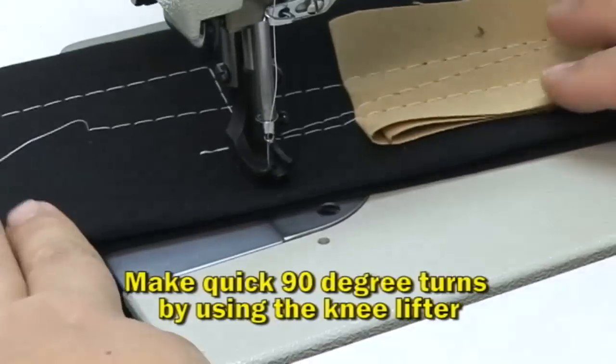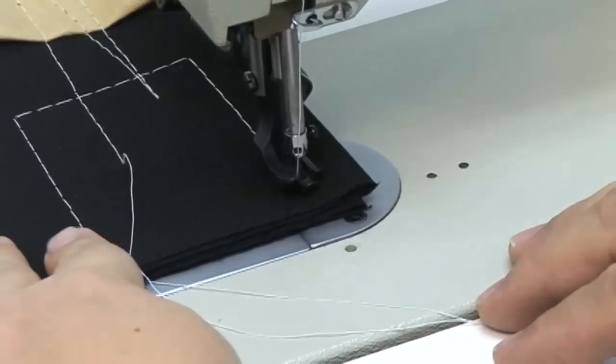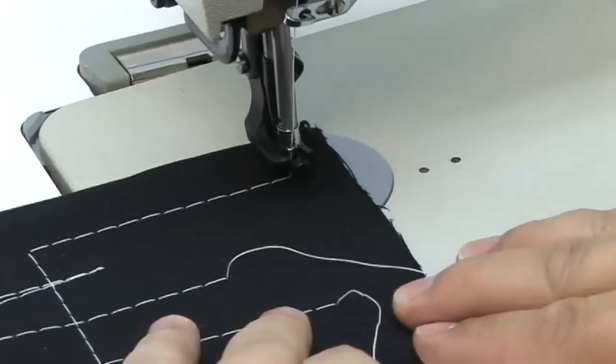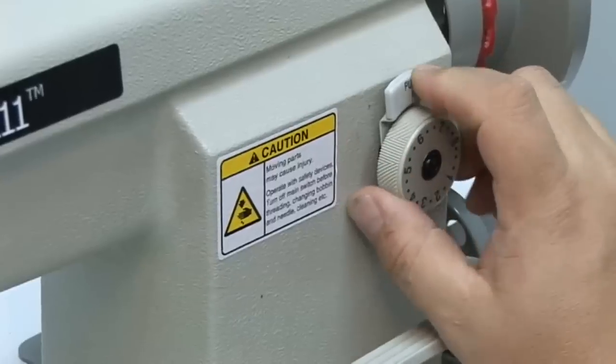Here we're using the knee lift for quick turns. The needle's buried and we lift the foot and pivot on the needle. This is great for high production where you don't have to reach behind the machine to lift a lever.